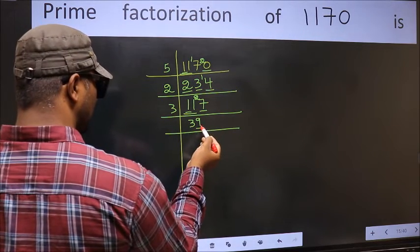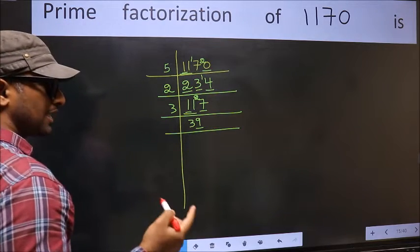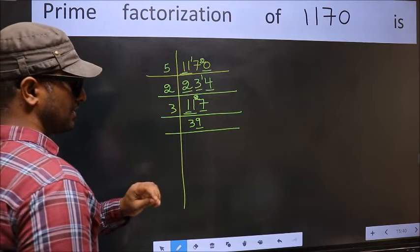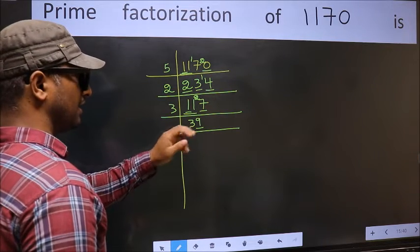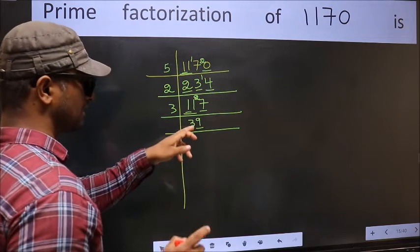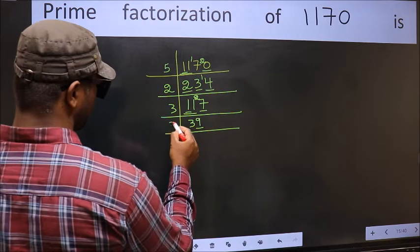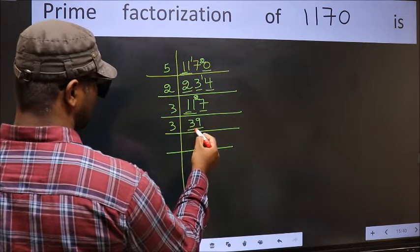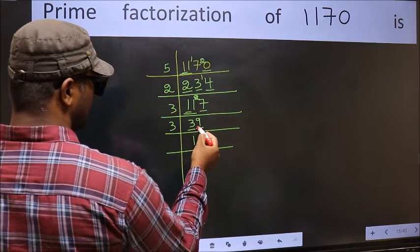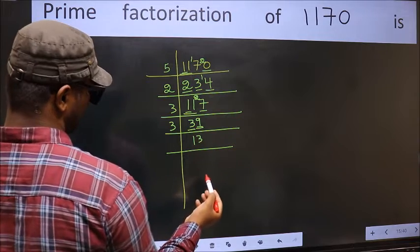Now the last digit is 9, not even, so not divisible by 2. To check divisibility by 3, we add the digits: 3 plus 9 is 12. Is 12 divisible by 3? Yes, so this number is also divisible by 3. Take 3 here. First number is 3. We get 3 in the 3 table at 3 times 1. The other number is 9. We get 9 in the 3 table at 3 times 3.